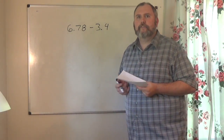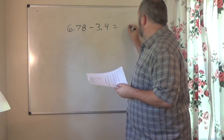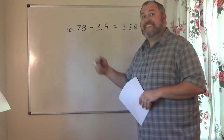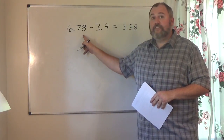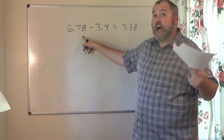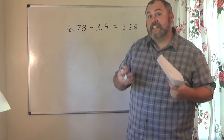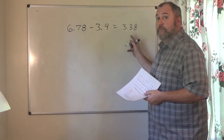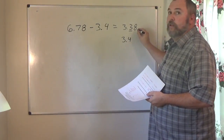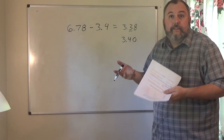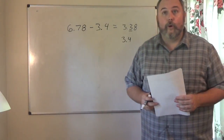Next problem: 6.78 minus 3.4. Simply subtract using your calculator and you get 3.38. However, since I need to make sure it's rounded to the correct precision, I look at which number is the least precise. 6.78 is precise to the hundredth; 3.4 is precise to the tenth. So 3.4 is the least precise — round to the nearest tenth. The 8 tells the 3 to go up, giving 3.4. Trailing zeros at the end of a decimal get dropped, so the final answer is 3.4.